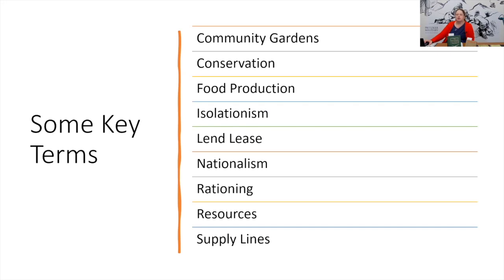Conservation is the insightful and careful use of resources so that we're not wasting things. Food production is growing food. Isolationism is a policy decision that was made in the early 20th century to focus on the United States as opposed to the larger world at large.